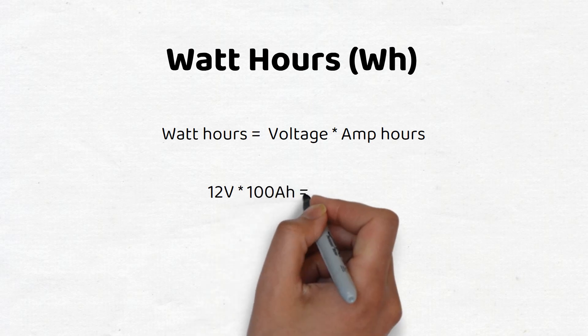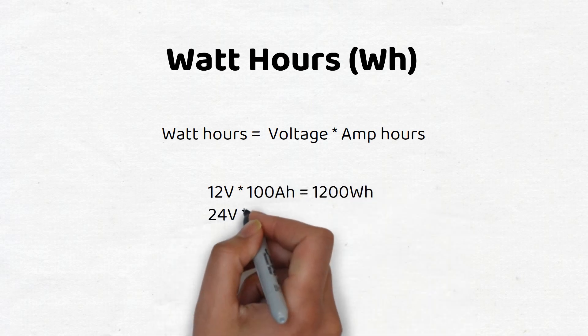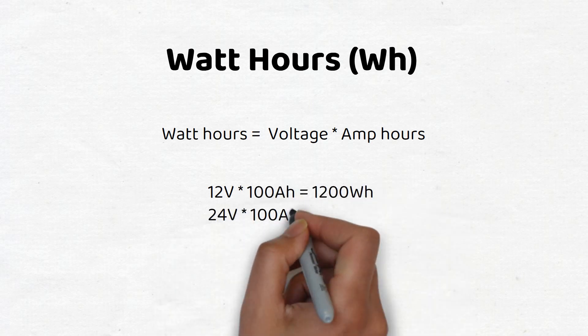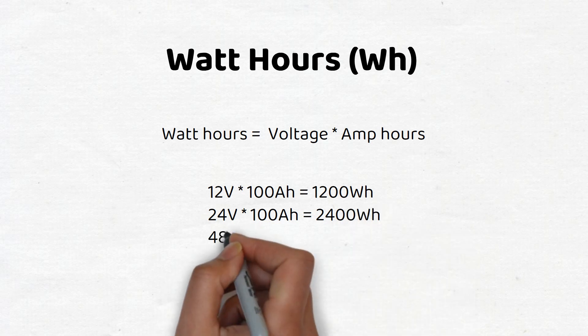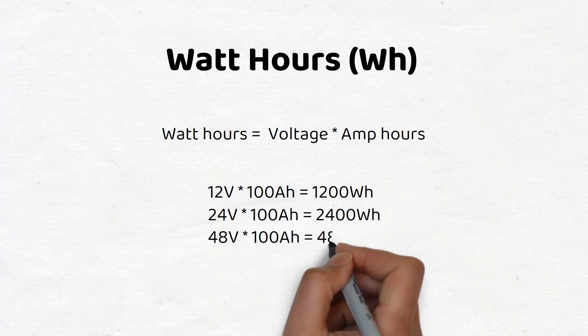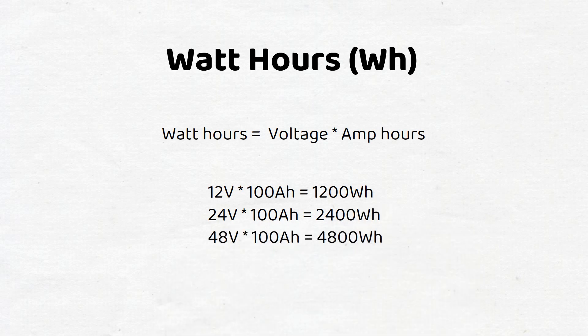For instance, a 12 volt battery rated at 100 amp hours stores 1200 watt hours of energy. While a 100 amp hour battery at 24 volts stores double that, for a total of 2400 watt hours. Or a 48 volt 100 amp hour battery stores 4800 watt hours of energy.